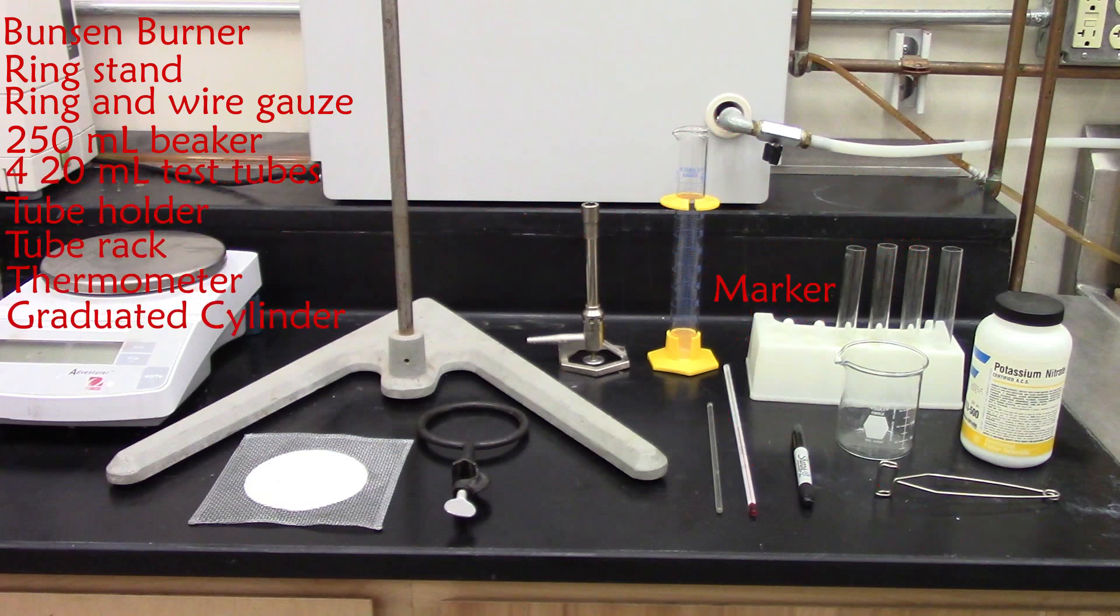You will also need a glass stirring rod and a weighing scale. For reagent, you will need 20 grams of potassium nitrate.